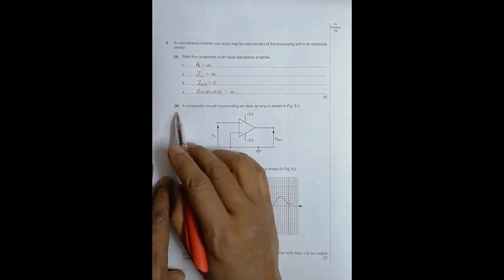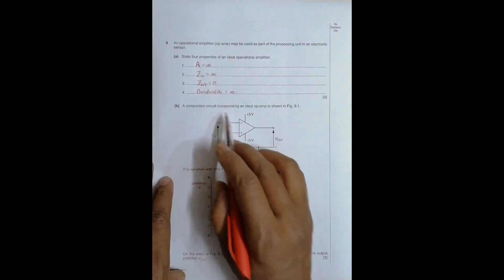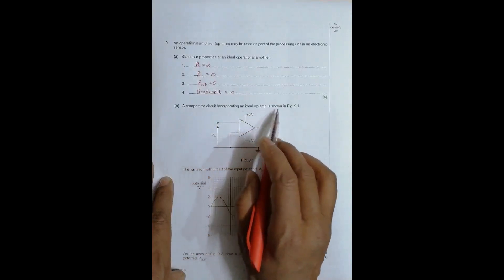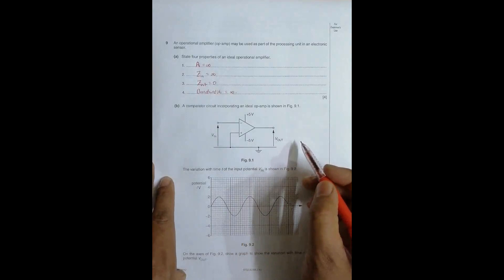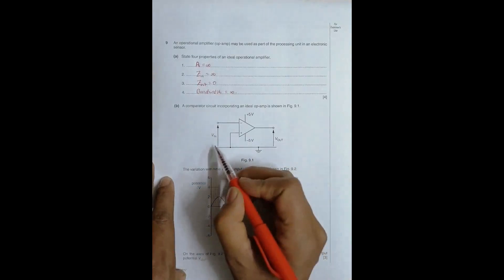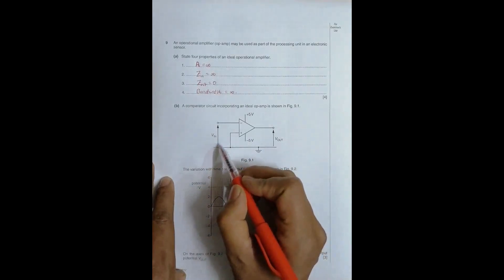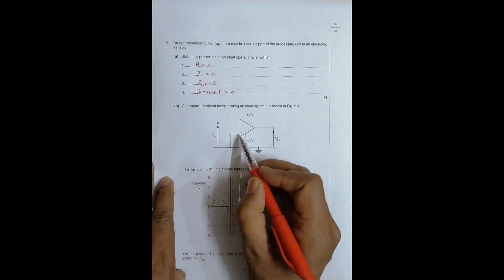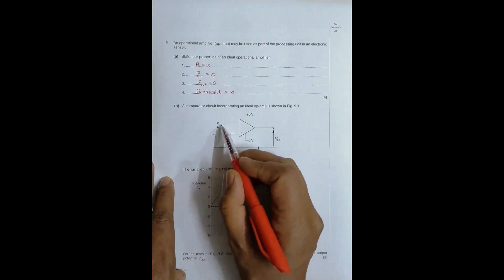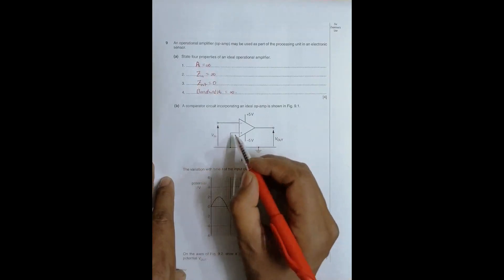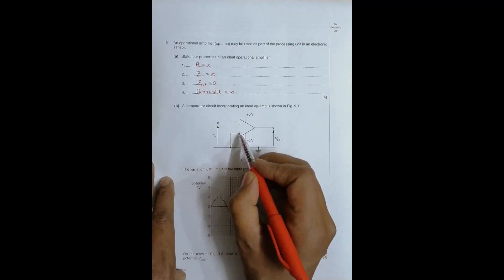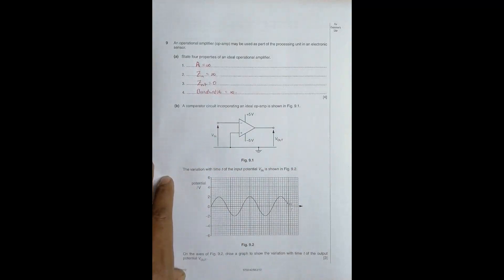Our main focus is on the other parts. In part B, a comparator circuit incorporating an ideal op-amp is shown in figure 9.1. V_in is applied at the inverting input terminal. At the non-inverting input terminal it is simply grounded — zero volts. The power supplies are plus five and minus five volts.